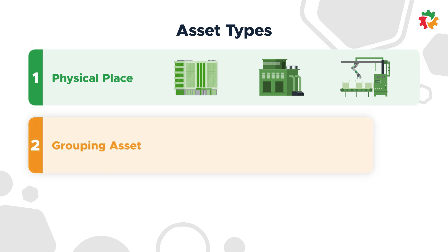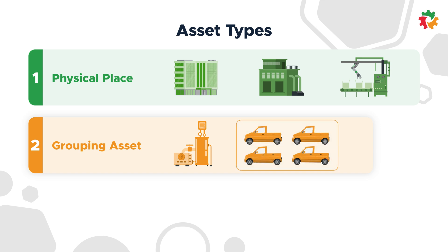The second type is a grouping asset. These are assets that don't fit squarely into one space. For example, this could be something like a ventilation system that spans multiple floors of a physical space, or a fleet of vehicles that are constantly moving. Creating parent assets like ventilation system or vehicle fleet allows you to stay organized and set up PMs for like assets within those categories.